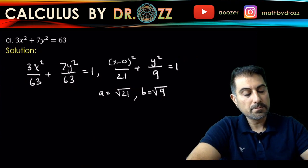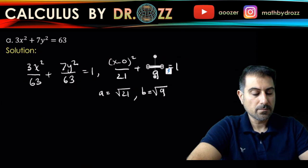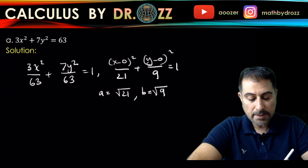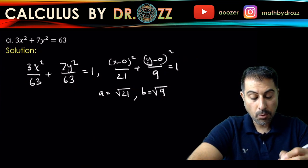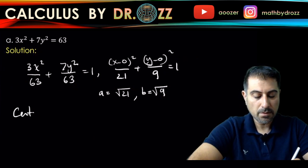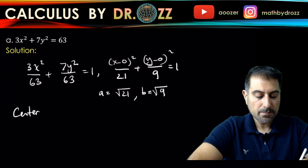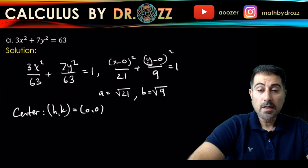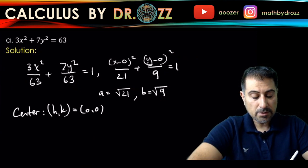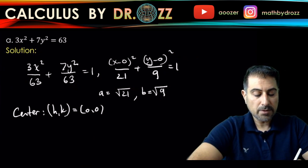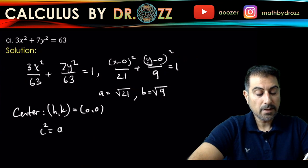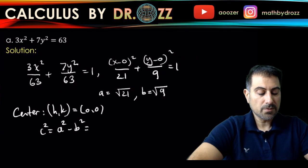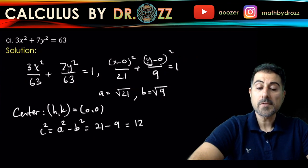and Y minus 0 squared here so that I can grab the center, the coordinates of the center as 0, 0. And we already have A and B. And we can look at C squared to be A squared minus B squared. Okay, so 21 minus 9 is 12. So C equals plus minus square root of 12.